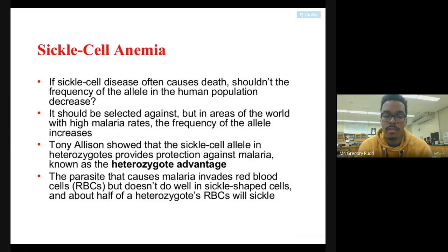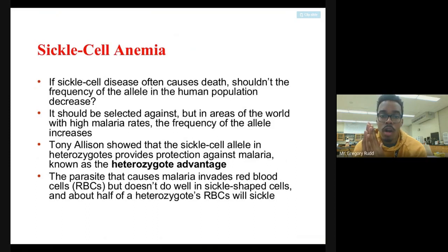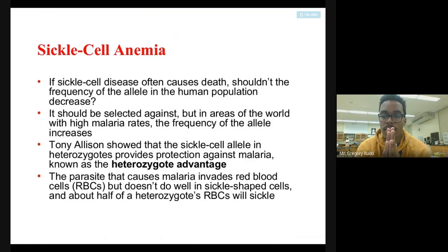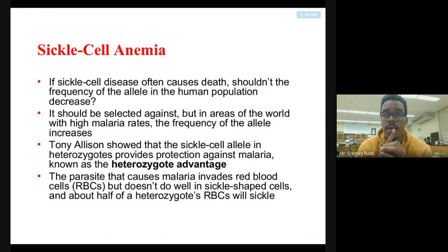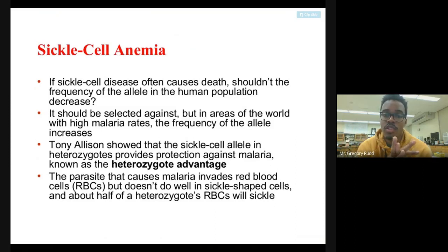Individuals who are homozygous dominant don't get sickle cell but have bad experiences with malaria and can die. Individuals who are homozygous recessive have sickle cell anemia and can't get malaria, but sickle cell will also often cause them to die. It's the heterozygotes — with one dominant and one recessive allele — who benefit most. The dominant allele means no sickle cell disease, but the recessive allele means some red blood cells are sickle-shaped, reducing their susceptibility to malaria. When the body destroys those sickle-shaped cells during a malaria infection, it's actually a good thing.